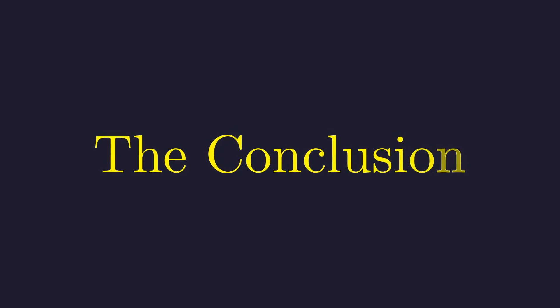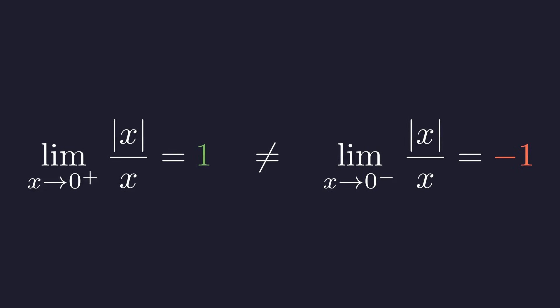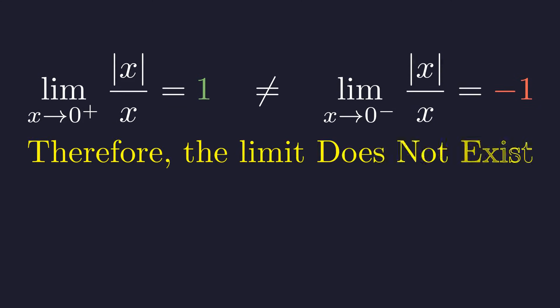Now we compare the two one-sided limits to make our final judgment. The right-hand limit is one. The left-hand limit is negative one. Crucially, they are not equal. Because the left and right-hand limits do not match, the overall two-sided limit does not exist.